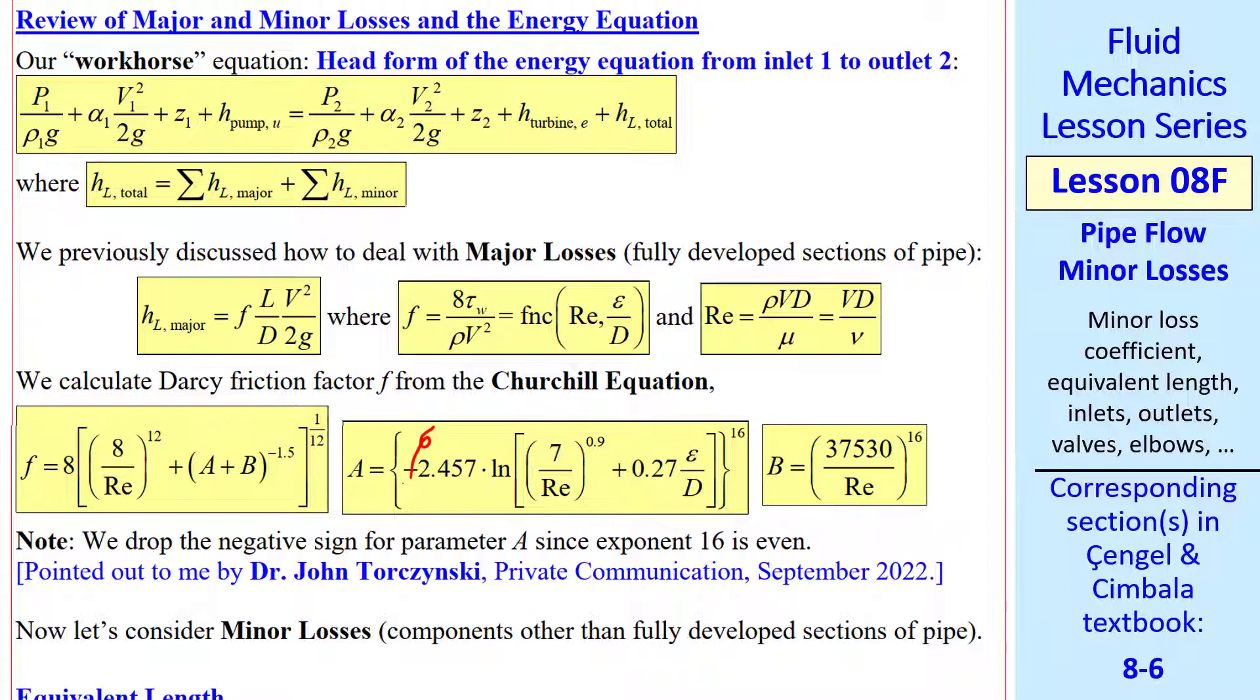From now on I'm going to drop this negative sign in parameter a, since this exponent 16 is even, and the negative sign doesn't make any difference. This is how the Churchill equation appears with the negative sign in all the publications I've seen, but it's not necessary. This was pointed out to me by my good friend, Dr. John Torzynski.